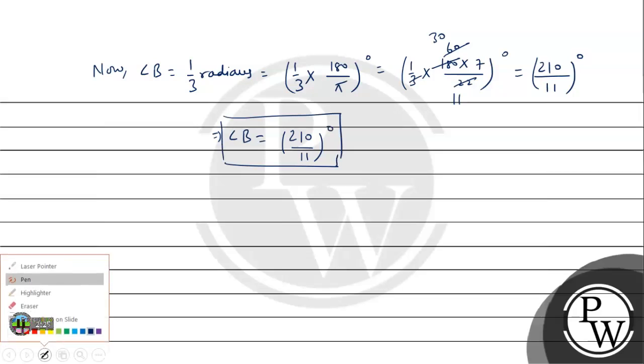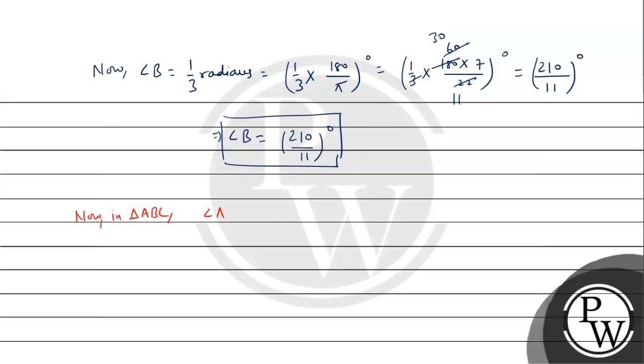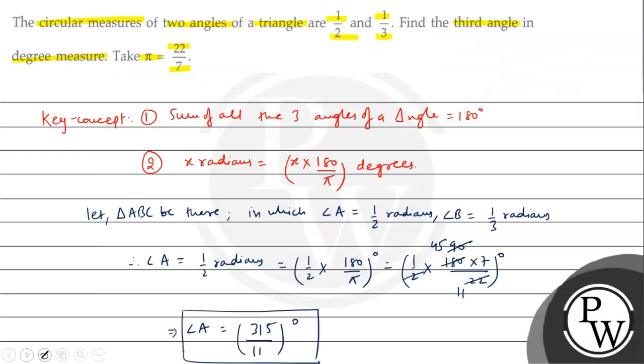Now, let's put angle sum property. Let's put angle A, B, C, angle A plus angle B plus angle C will be 180 degrees. So, angle C is what will happen? 180 degrees minus angle A plus angle B. So, 180 degrees minus angle A, how much is it?